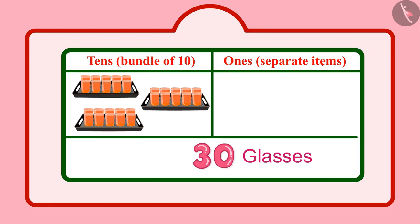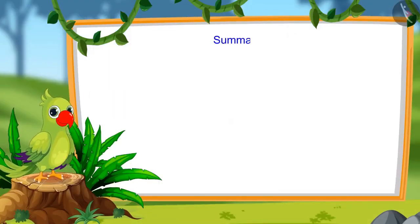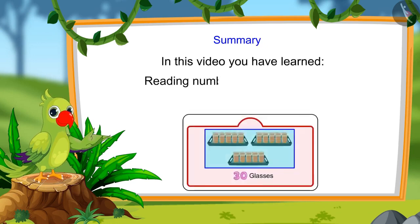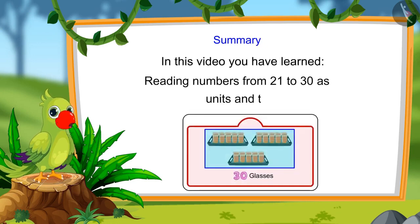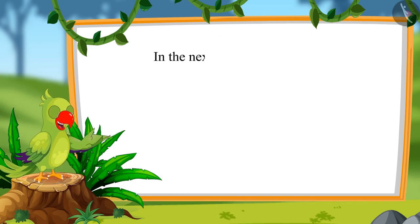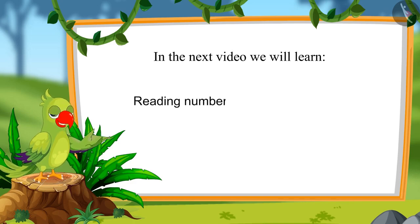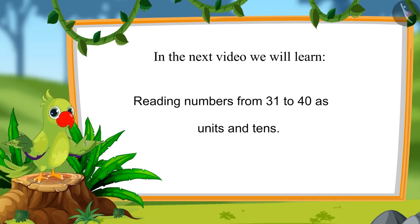So, children, today 30 glasses of sherbet were made in Chotu's house. In this video, you learned numbers from 21 to 30 and how to read those numbers as units and tens. In the next video, we will learn to read numbers from 31 to 40 and how to read those numbers as units and tens.